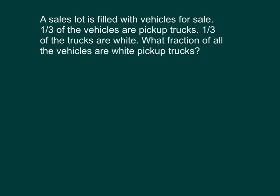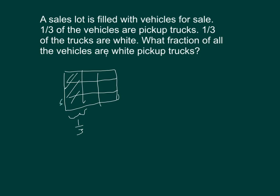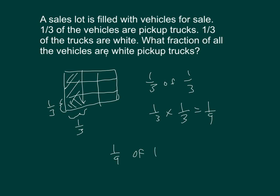A sales lot is filled with vehicles for sale. One third of the vehicles are pickup trucks. One third of the trucks are white. What fraction of all the vehicles are white pickup trucks? We're thinking of one third of one third. Drawing our model — there's one third, and there's also thirds. Where they intersect, we get one ninth. One third of one third is the same as one third times one third, which equals one ninth. One ninth of the vehicles are white pickup trucks.